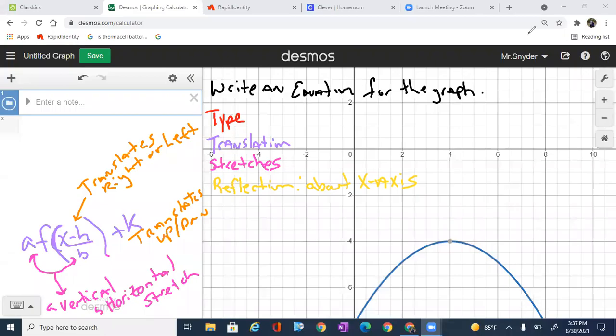All right guys, let's go ahead and write the equation of the blue graph that you see in front of you using transformations. The first thing I do is identify what type of graph this is. If you look at the formation of this blue graph, you should notice that it is a quadratic.